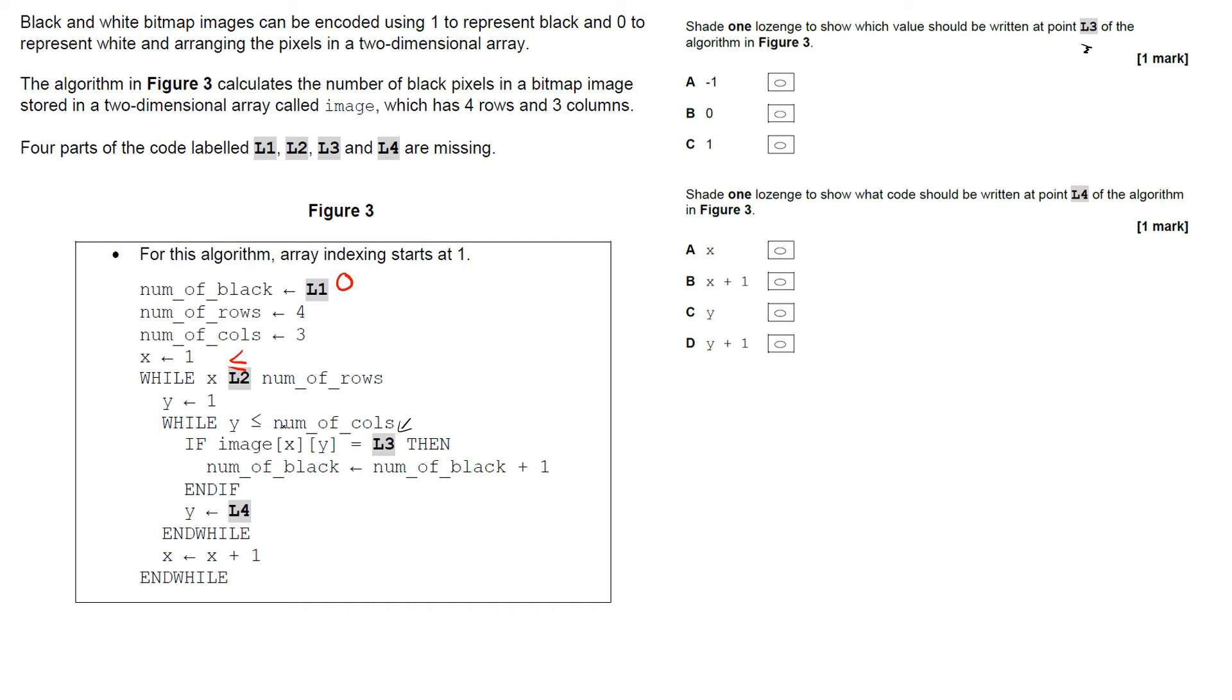And then we're going to the number of columns within those rows. So if the image array at location, say, 1,1 in the first instance is L3, then number_of_black, number_of_black plus one. So we're probably saying that we're going to check for a black, and if it's a black we want to add one.